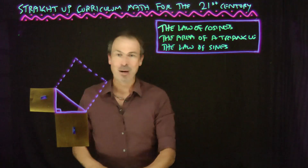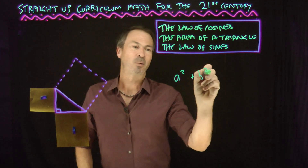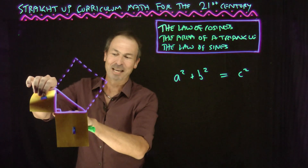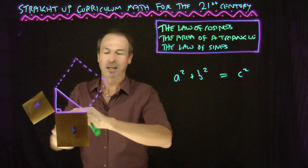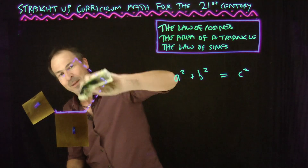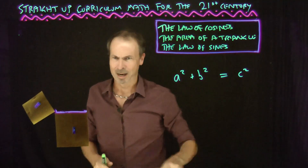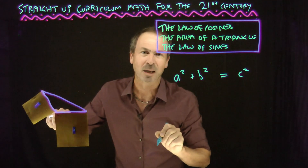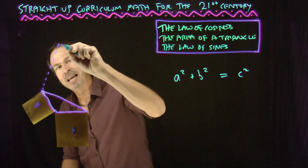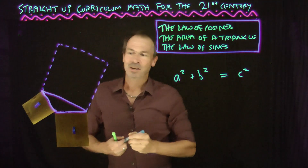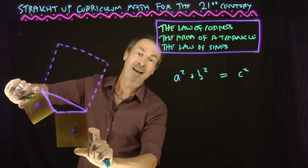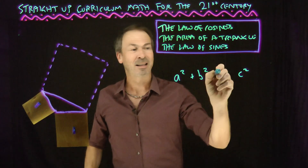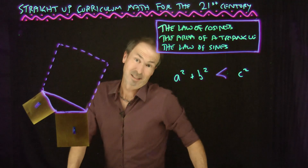Right now we have a² + b² = c² for a right triangle. But if I start messing around and tilt the square on the left, making that right angle bigger — making it obtuse — I can see I now have a bigger square. So if I have an obtuse angle, the theorem becomes a² + b² < c².